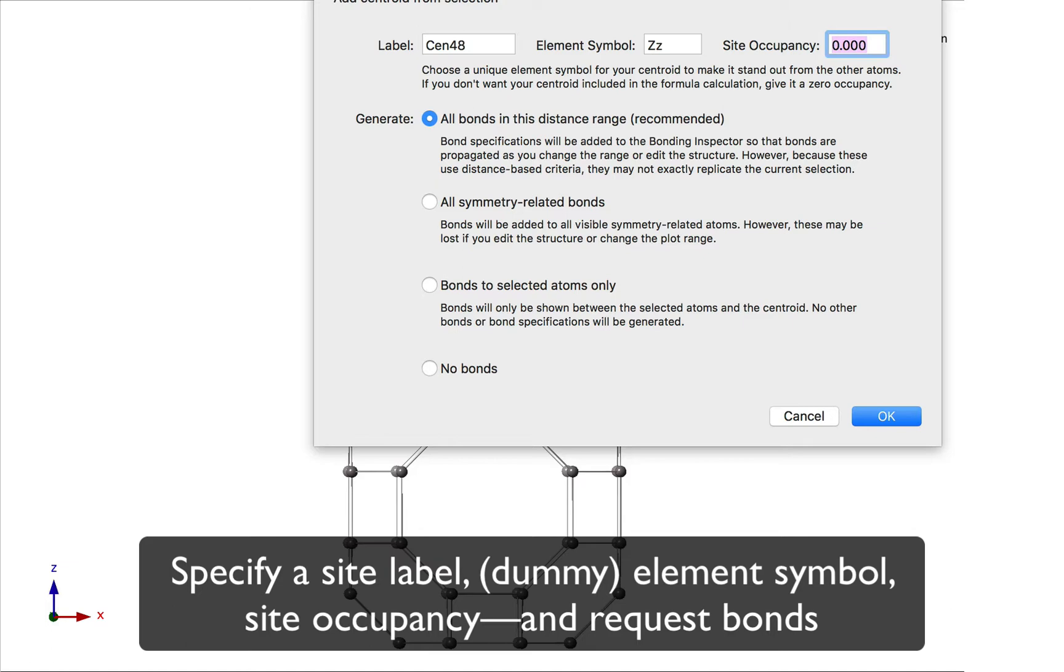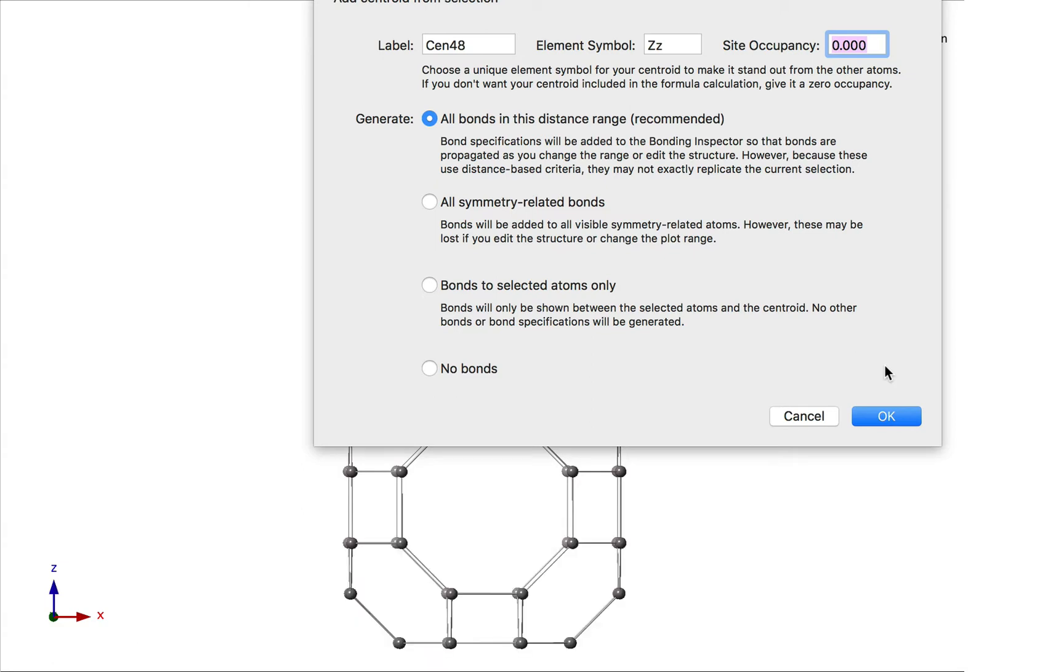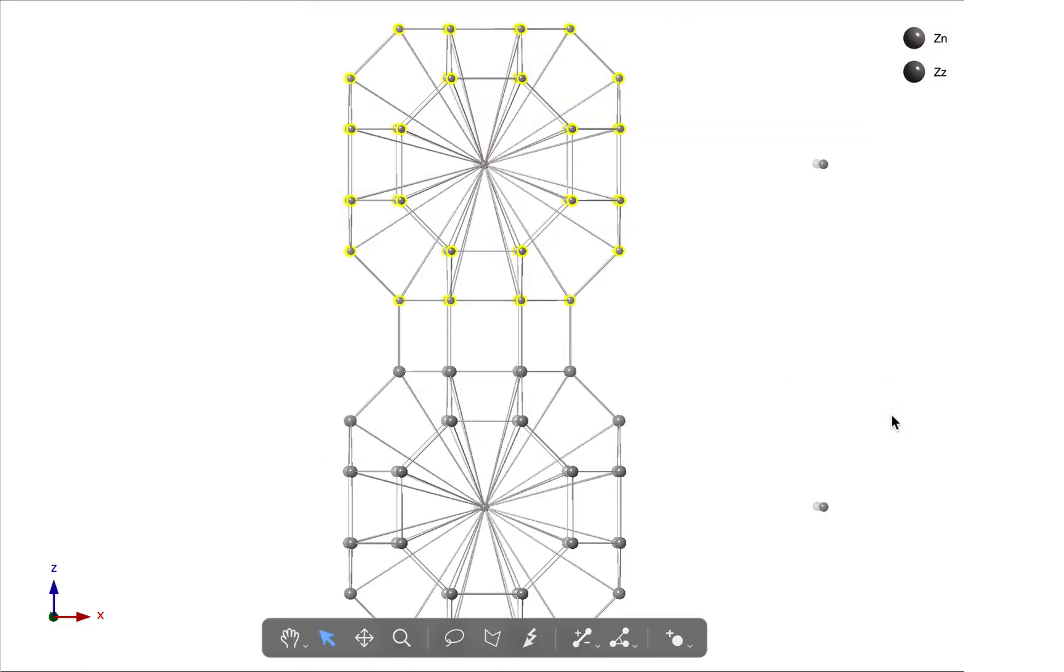Notice that by default, CrystalMaker is giving you a site occupancy of zero. This means that the calculated formula for the resulting structure won't include the dummy atoms. Now we're going to use the default option, which is to generate all bonds in the distance range. Those are bonds between our dummy atom and the vertex atoms. These bonds are essential because polyhedra require bonds between a centroid atom and vertex atoms. So let's just click OK.